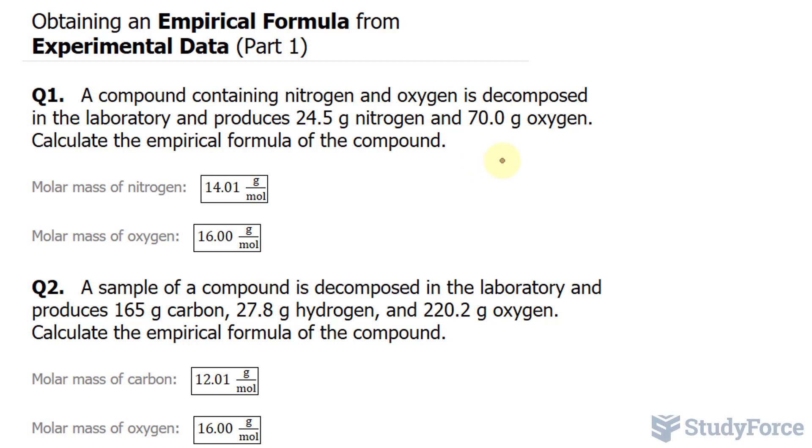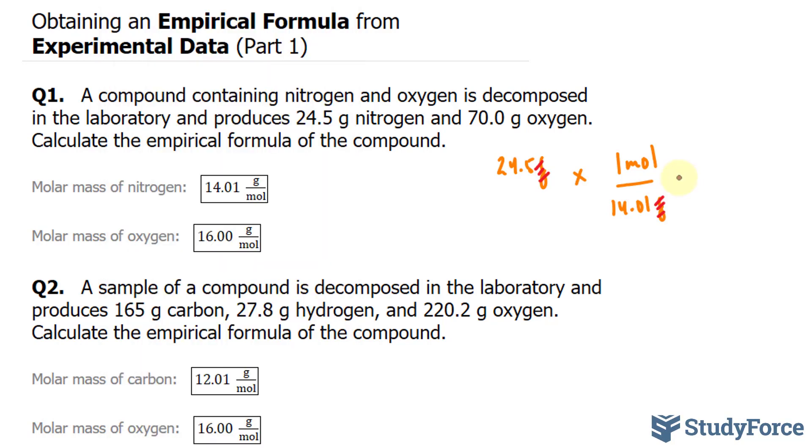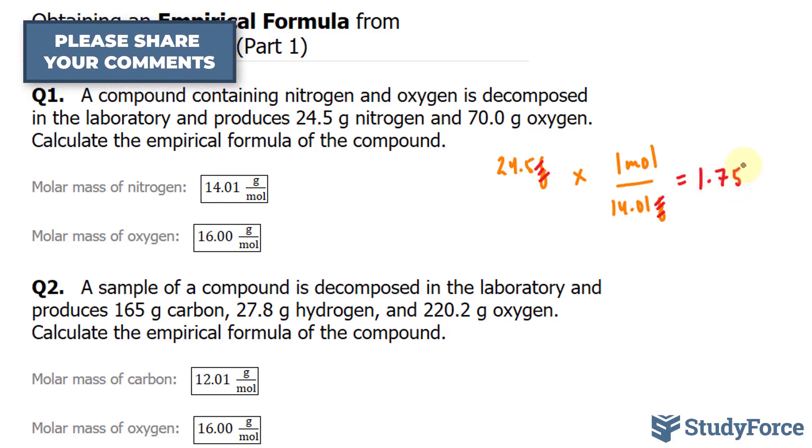Let's start with nitrogen. We have 24.5 grams and we'll multiply that by the flipped version of this number. So notice that it's 14.01 grams over mole. I'll change the grams so that it's at the bottom and the moles so that it's in the numerator position. So we end up with this number multiplied by 1 mole over 14.01 grams. The reason why I'm orienting it this way is so that the grams units cancel out when we multiply. Using our calculator, we have 24.5 times 1 divided by 14.01 and we get 1.75 moles.